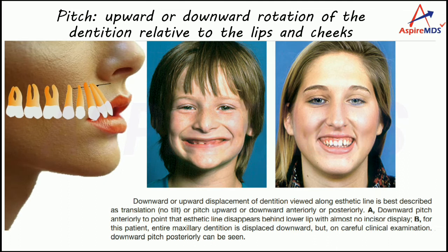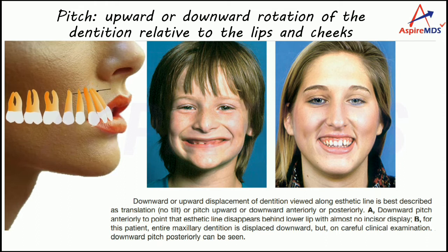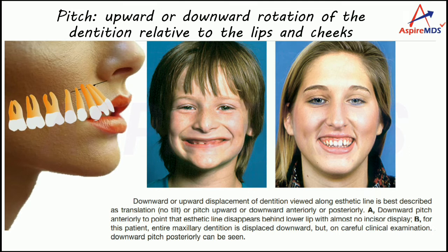In the next example, there is a very gummy smile. There are two reasons for this: first, there is a downward transition of the maxillary dentition, and in addition there is also a downward pitch posteriorly. Because of this combination, this kind of smile appears. So based on this, you can say that pitch is present here.